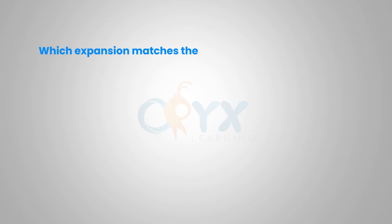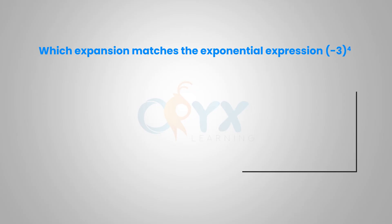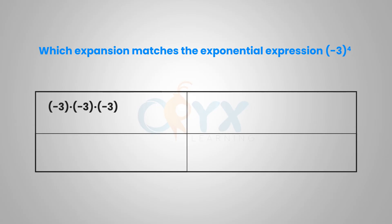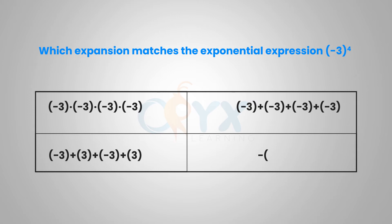Which expansion matches the exponential expression negative 3 to the 4th? In negative 3 to the 4th, we know that the base, negative 3, should be used as a factor 4 times. So negative 3 times negative 3 times negative 3 times negative 3, which is the first answer choice.